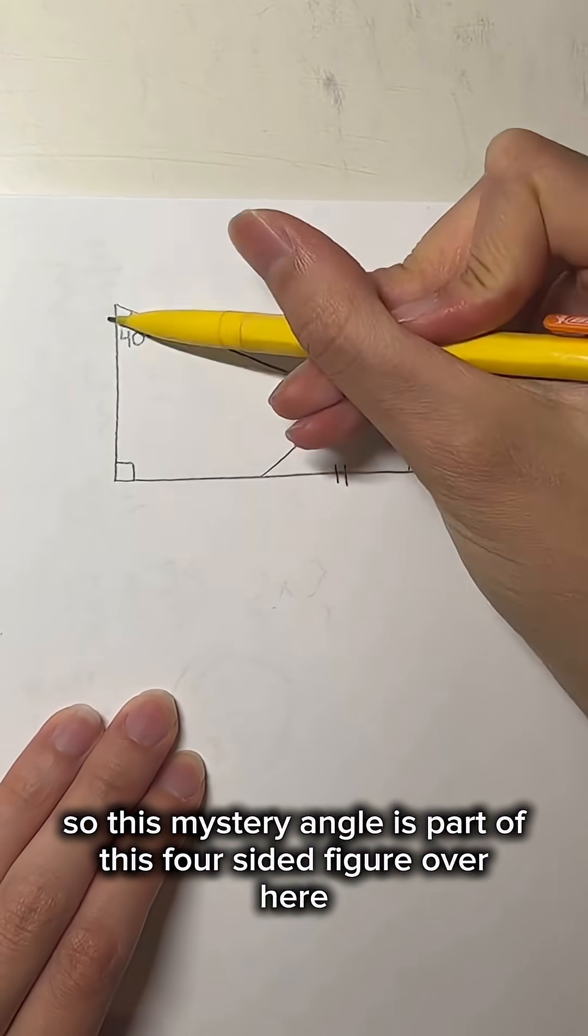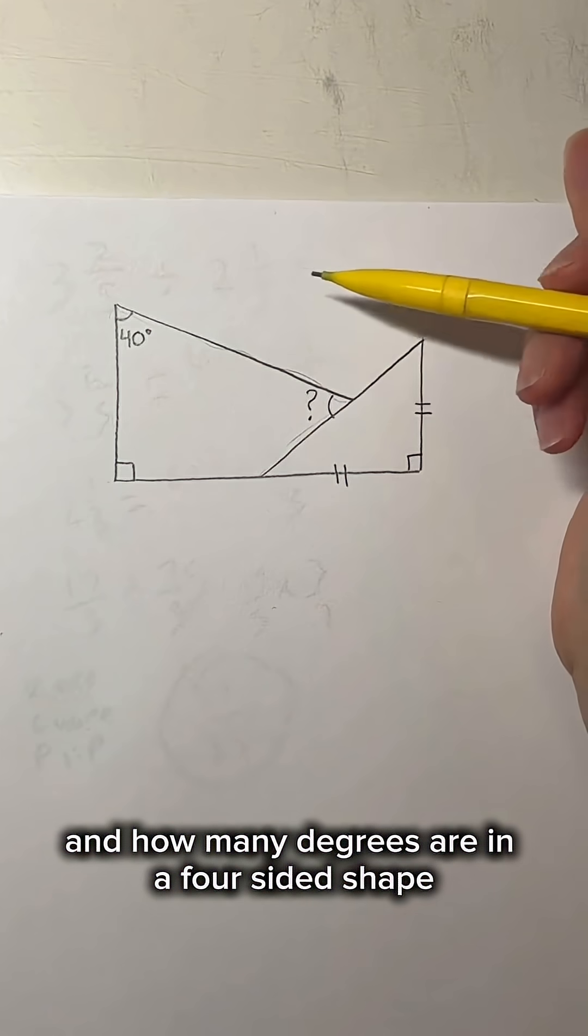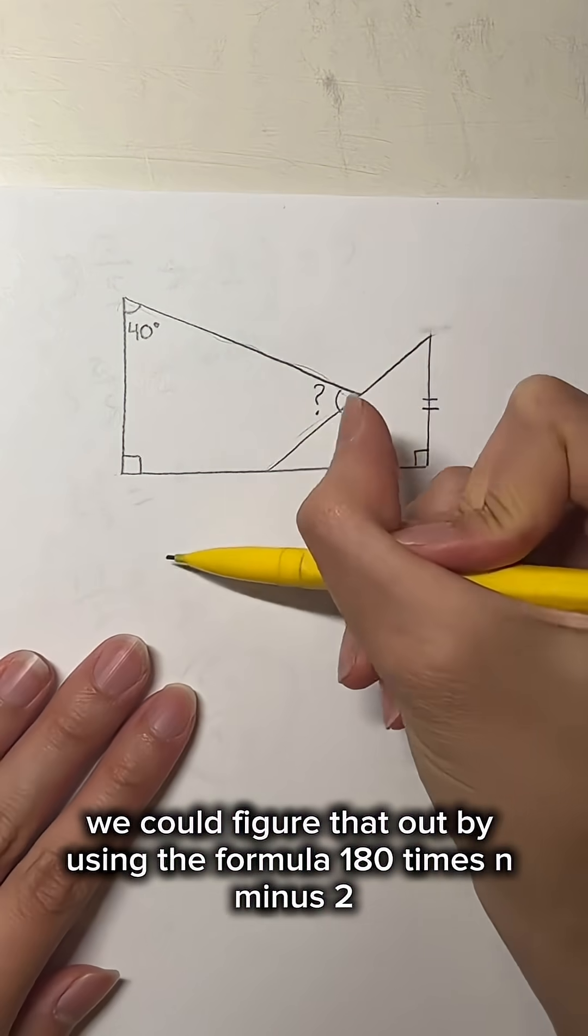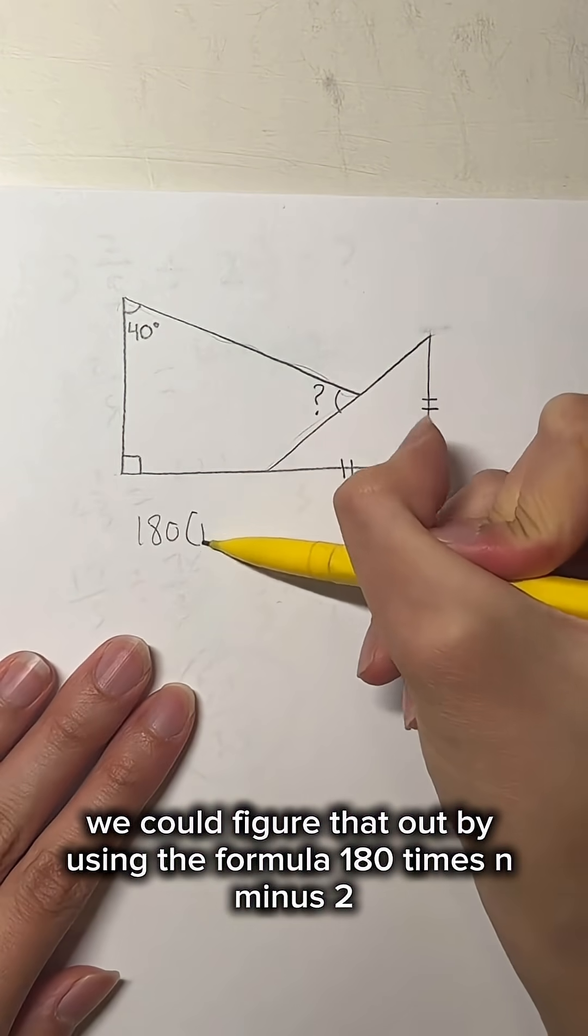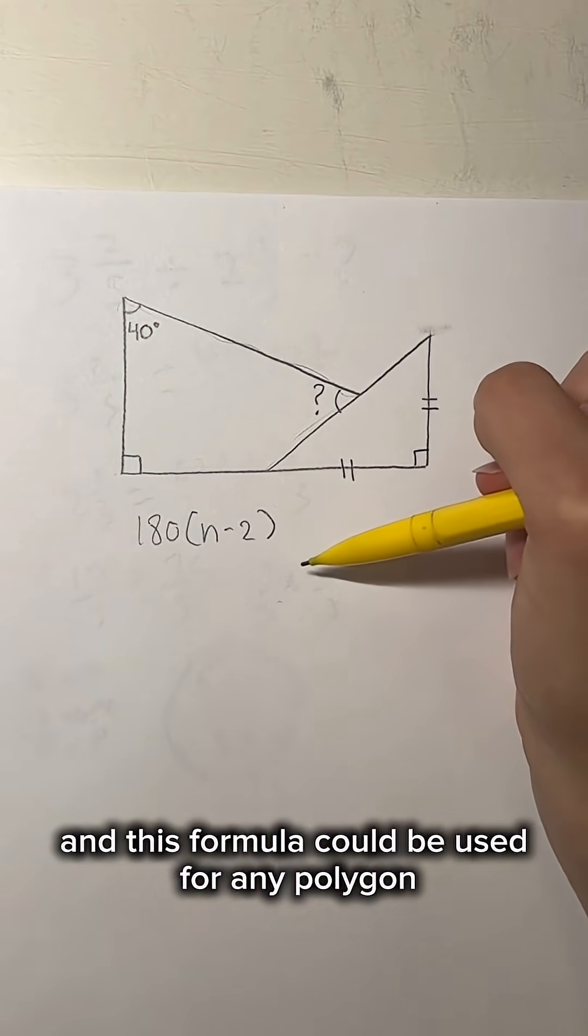This mystery angle is part of this four-sided figure over here. How many degrees are in a four-sided shape? We can figure that out by using the formula 180 times n minus 2 to find the total degree measure of this polygon, and this formula could be used for any polygon.